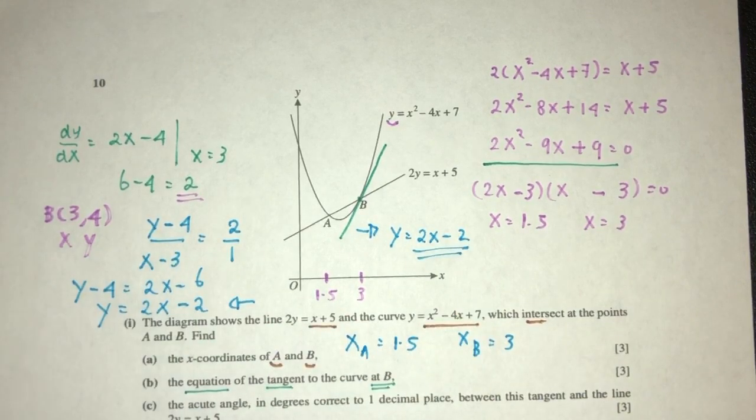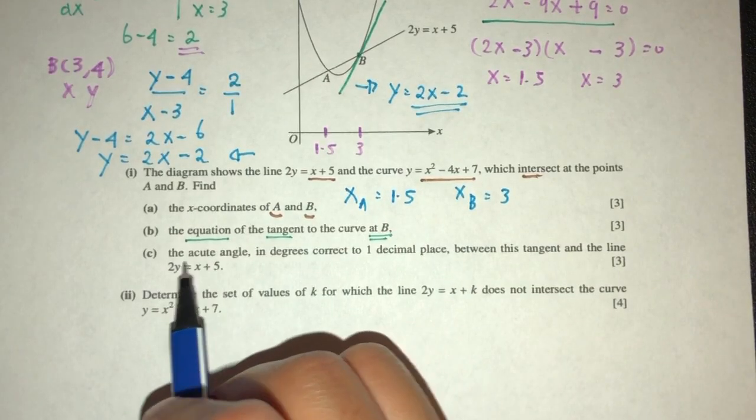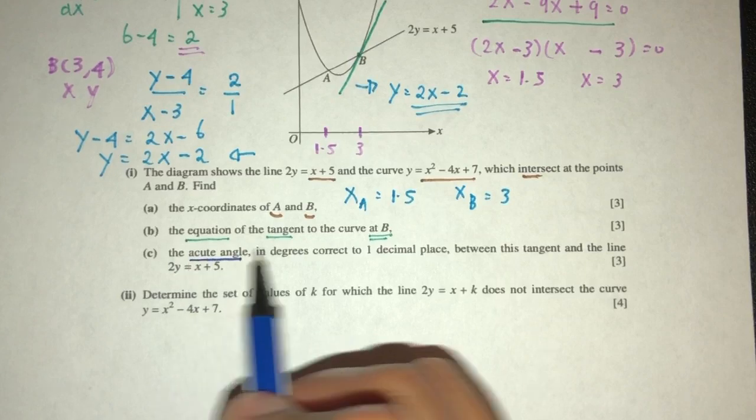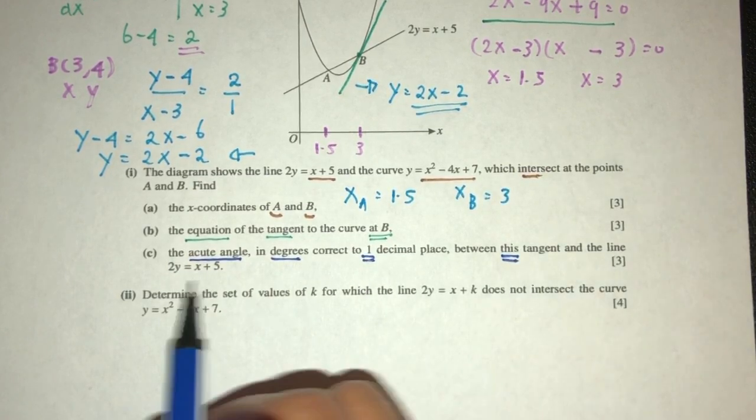Again, I do apologize for the noise. I do not control that. It always happens. So, I apologize for that. Now, for point C, we have to find the acute angle in degrees correct to 1 dp between this tangent and the line there. So, pretty easy.